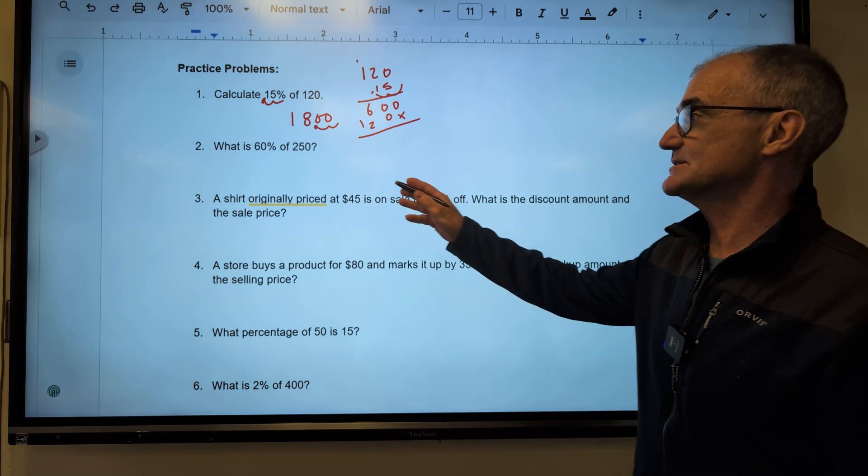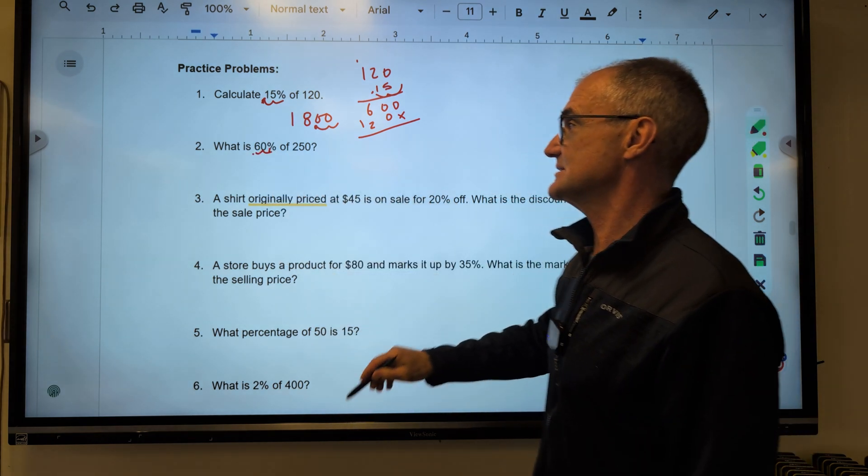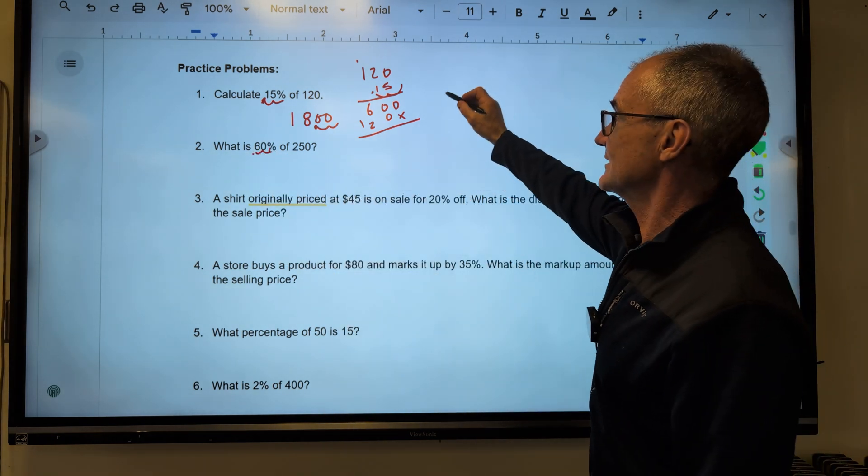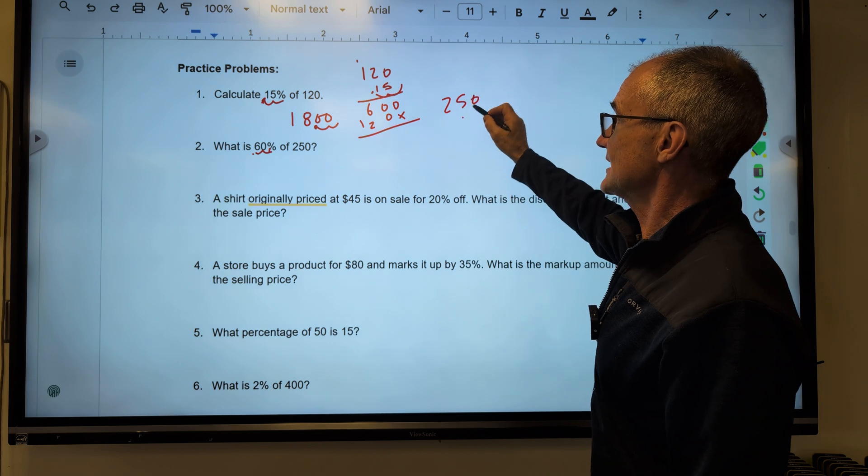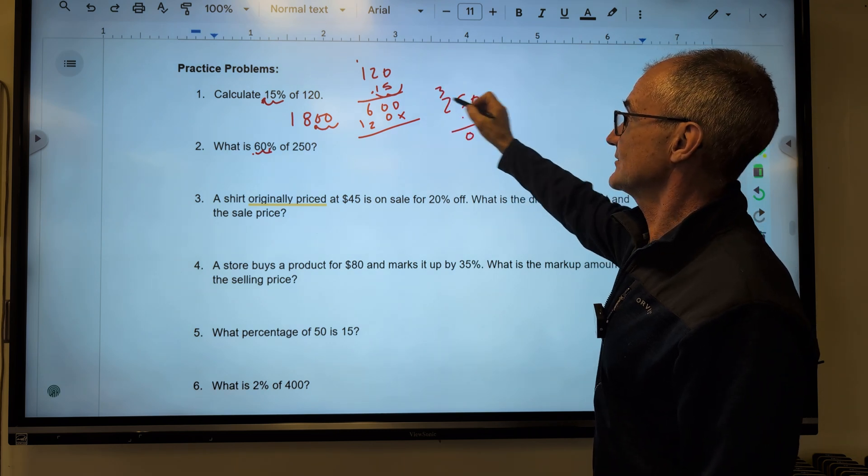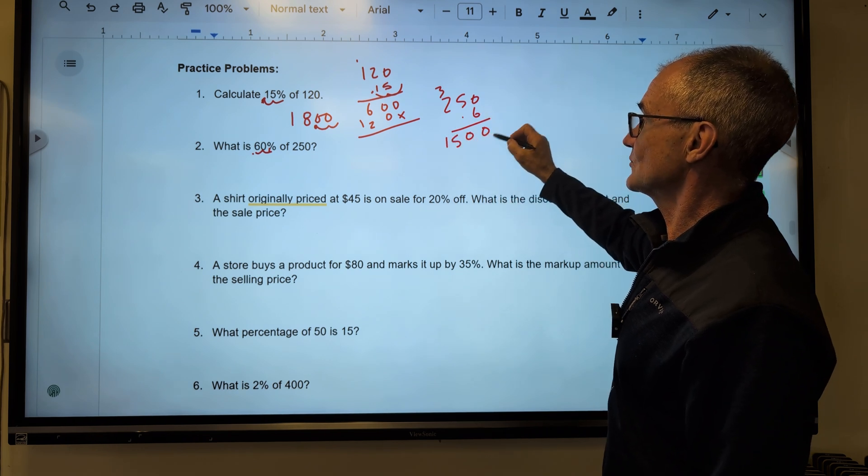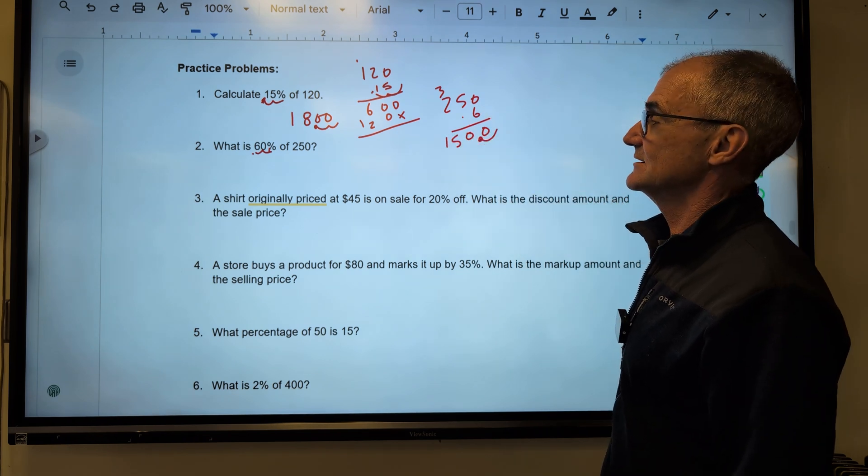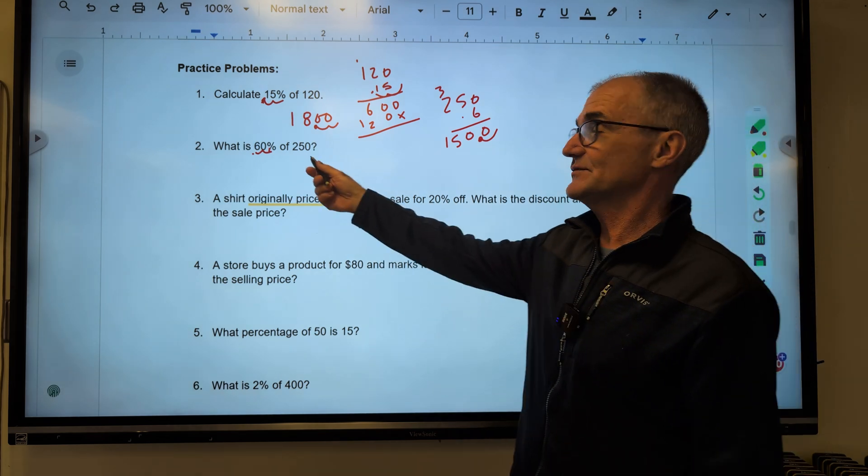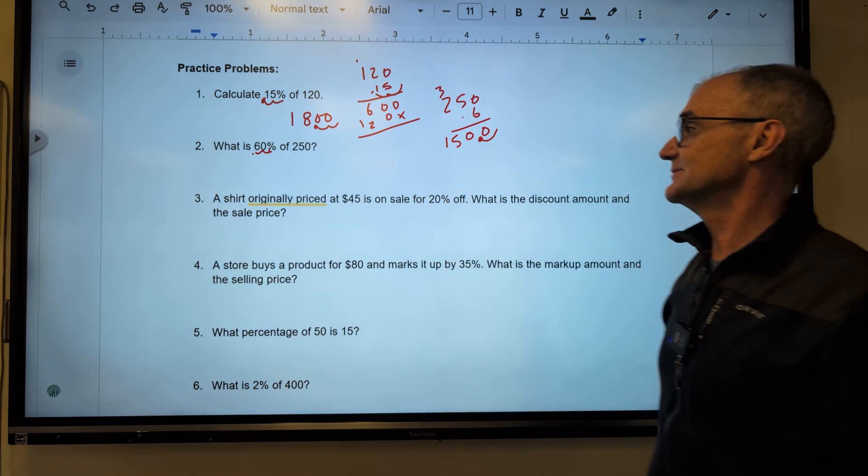What's 60% of 250? Again, shooting that decimal over one, two, point six. I don't have to keep the zero on there. I could just go 250 times that .6, zero, 30, carry the three, 15. Decimal place is over one to give me 150. Half of 250 is 125. 60 is more than that, so I'd expect something like that.